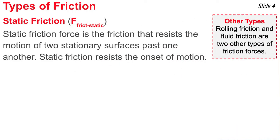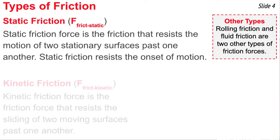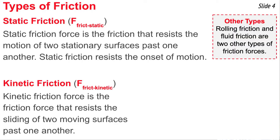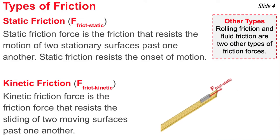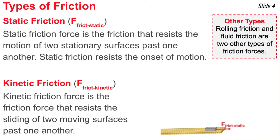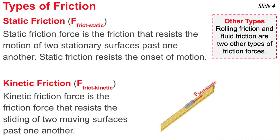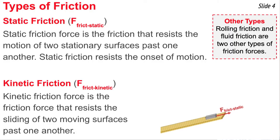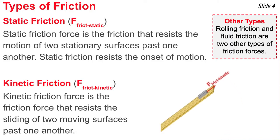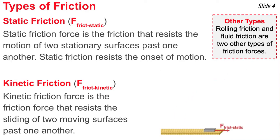There are many types of friction. One type is known as static friction — the friction force that resists the motion of stationary objects as they try to move past one another; it resists the onset of motion. A second type is kinetic friction, which resists the sliding of two moving surfaces past one another. A brick on a tilted board demonstrates this: at lower angles, static friction keeps the brick adhered to the board, but once the brick begins to move, kinetic friction kicks in and resists its sliding motion.